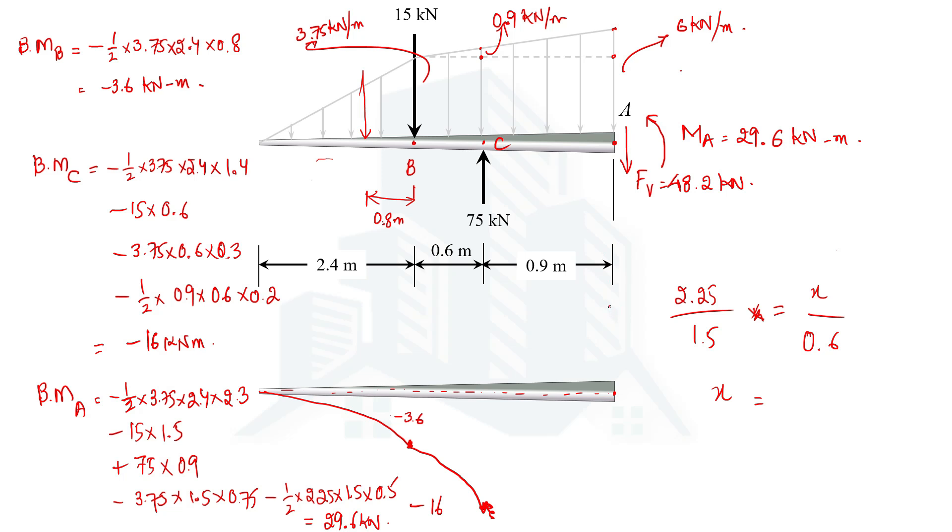So 29.6 should be somewhere over here and this should be connected as a curvature. This was point B, this was point C, and this is point A that has a magnitude of 29.6.